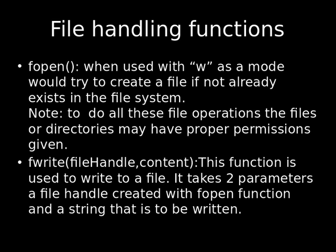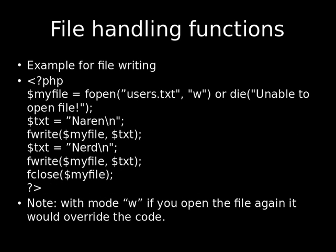fwrite takes two parameters: a file handle created with fopen and a string that has to be written to the file. This function is used to write to a file. Note that with 'w' mode, if you open a file again it will overwrite the existing content.